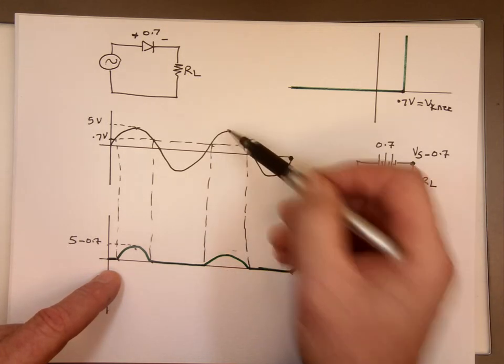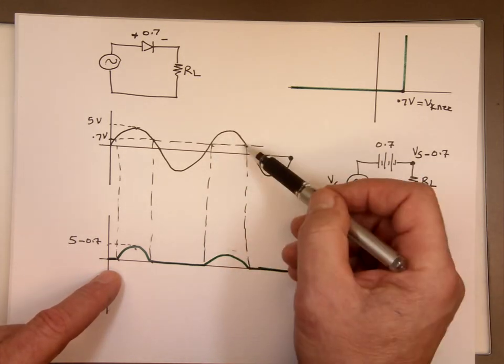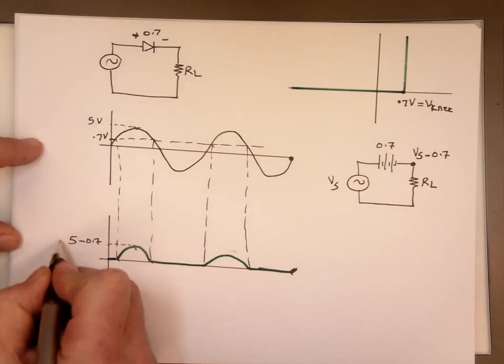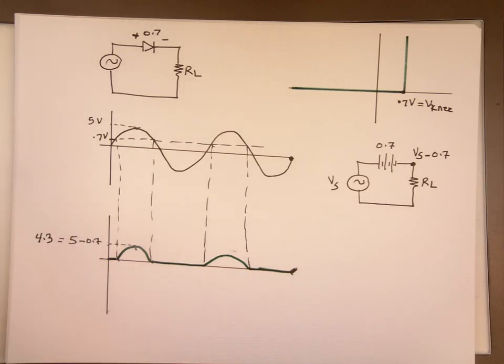The 5, this goes to 4.3. The 0.7 back to 0. And now you know what half-wave rectifier is.